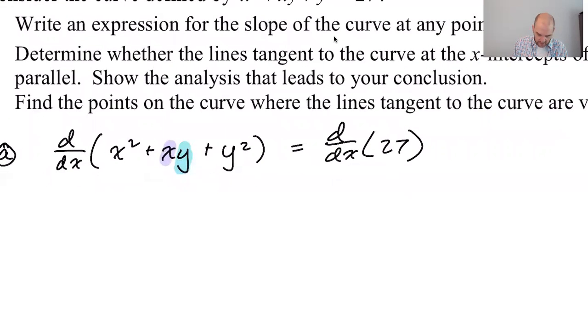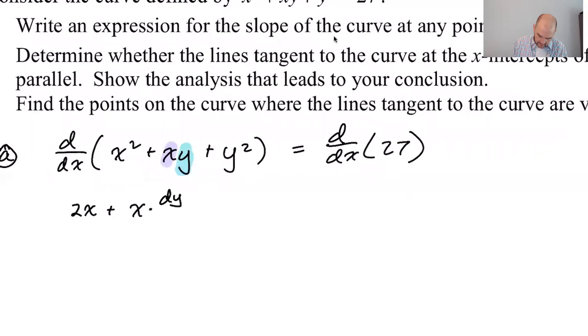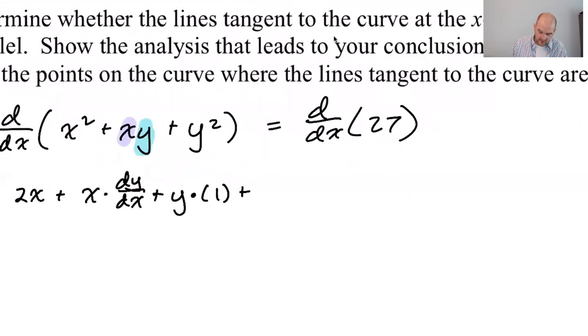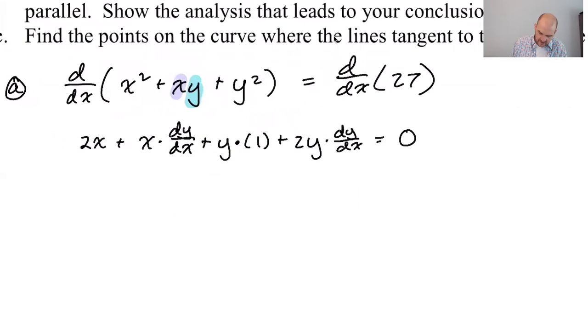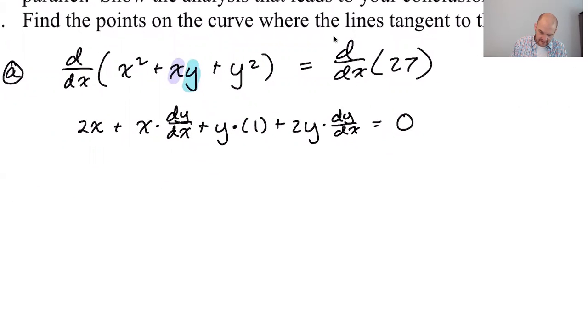So the derivative of x squared with respect to x is 2x. The derivative of product is first derivative of the second, so the derivative of y with respect to x is dy/dx. So first times the second plus second derivative of x with respect to x is one, plus the derivative of y squared. So the derivative of something squared is two times that thing times the derivative of that thing, which is dy/dx, and then it will equal zero. What I usually do is move everything that doesn't have a dy/dx to one side, and then everything with the dy/dx I leave on the other side and factor.